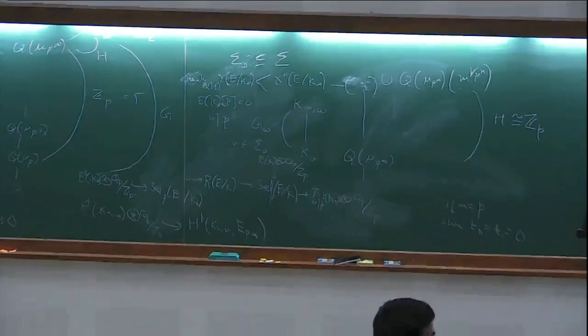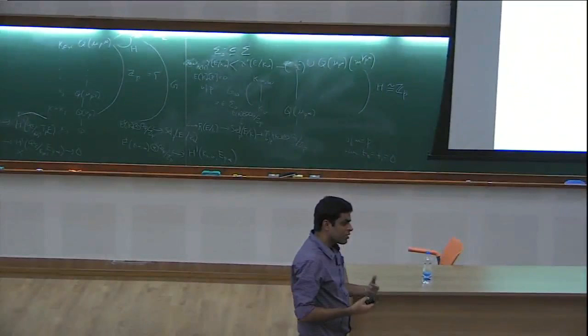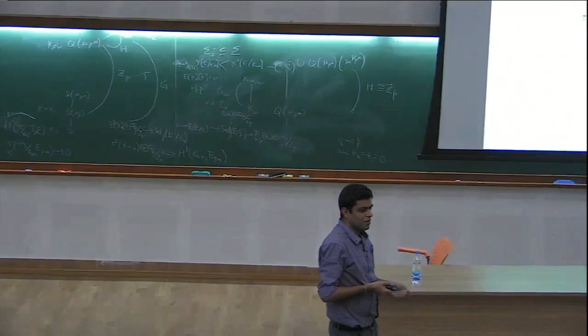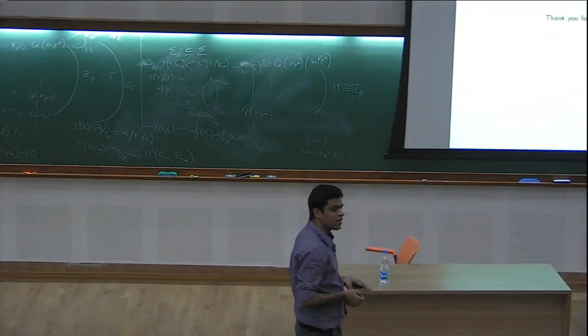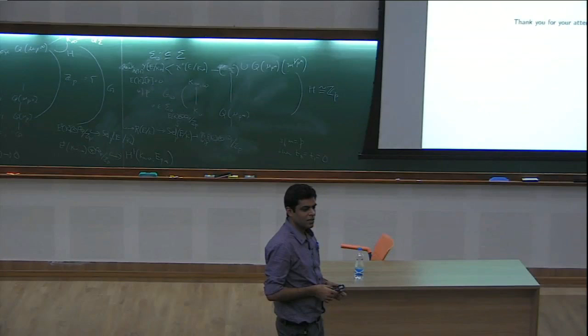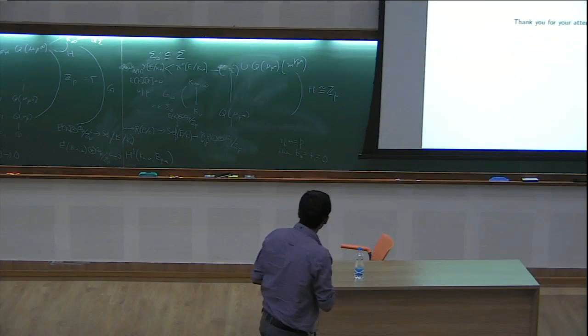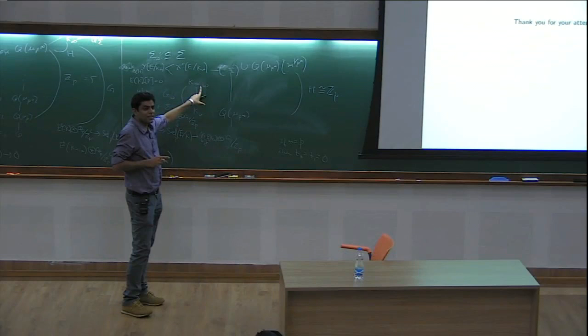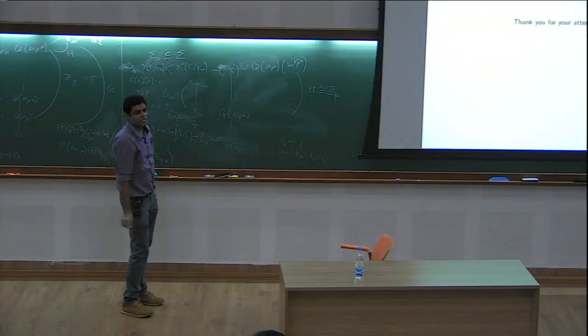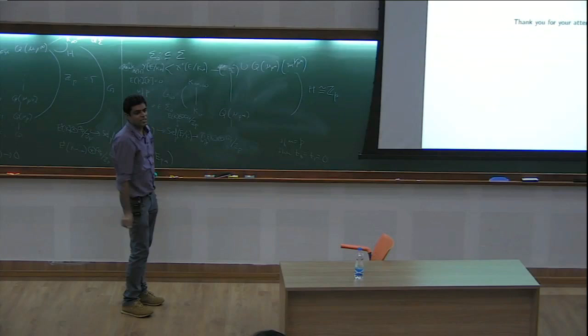There were no examples known before in the supersingular situation, because all previous examples used the comparison with the Selmer group, which could only be done in the ordinary case. The plus-minus approach works once you reformulate the statement in terms of the cyclotomic extension. I worked with two-dimensional admissible Galois groups, i.e., Gal(K_∞/K) of dimension two. Extensions to more general cases have some technical complications.